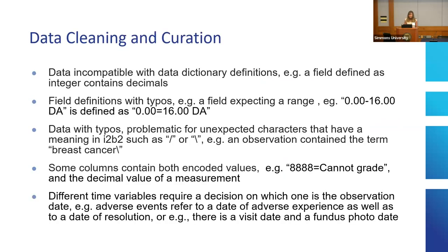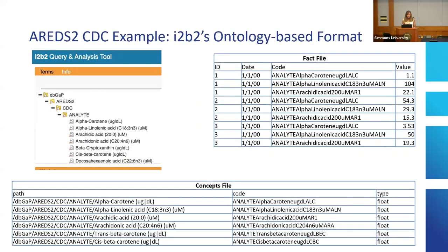Regarding data cleaning and curation, we had to add that slide because it took us so much time — it was a headache. Some things are defined as integer but have decimals and the code breaks. You're expecting a range with a dash in between, but they add an equal sign. And of course with i2b2, the slashes mean something — they're the path in the database — so that also broke things.